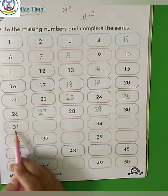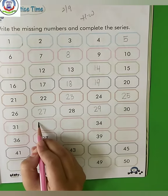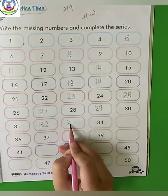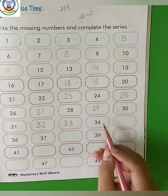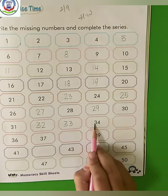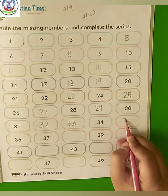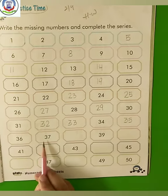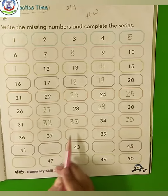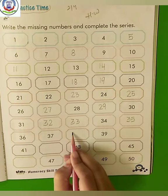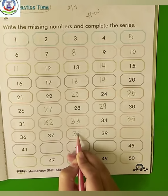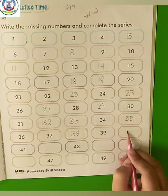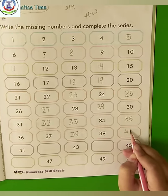After 30? 30 plus 1, 31. 30 plus 2, 32. 30 plus 3, 33. Then 30 plus 4, 34. After 34? 30 plus 5, 35. 30 plus 6, 36. 30 plus 7, 37. After 37? 30 plus 8, 38. 30 plus 9, 39. After 39? 30 plus 10, 40.